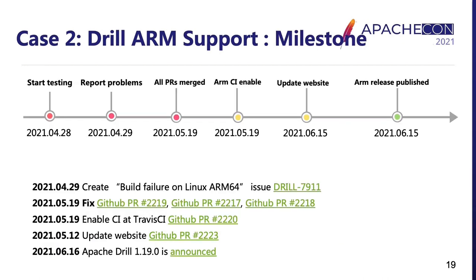Here is the timetable of all main points. I started testing Drill on my ARM64 machine on April 28th. I reported the issues on their developer mailing list the next day. In this mail thread, we also discussed which continuous integration system to use to cover Linux ARM64 and prevent regressions in the future. The project decided to use Travis CI. The developers had moved away from Travis CI to GitHub Actions several months earlier, but since GitHub Actions does not yet support ARM64, they agreed to use Travis CI only for ARM64. By May 19th, all pull requests had been merged and Travis CI had been re-enabled.